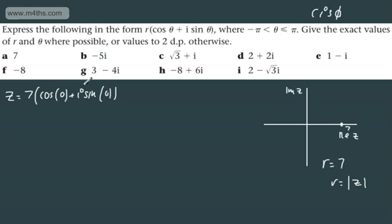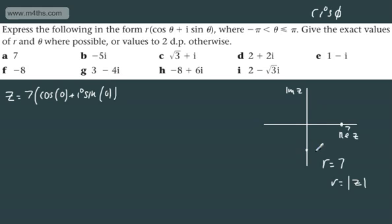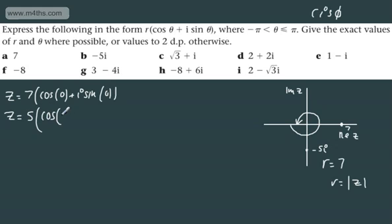Let's now consider negative 5i. That is going to sit down on the negative imaginary axis at minus 5i. Remember, we measure from negative pi round to positive pi. The argument of this complex number is going to give us negative pi by 2. We can see that R is going to be 5 as it's lying on the axis. So we can write this with modulus 5 and we have cosine of minus pi by 2 plus i sine of minus pi by 2. That is in mod-arg form.